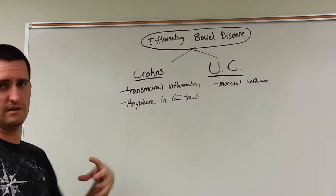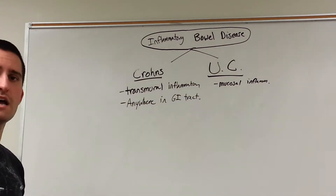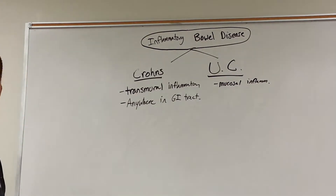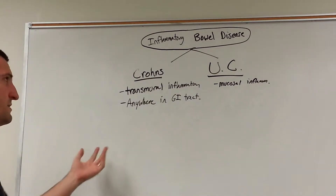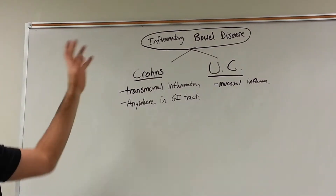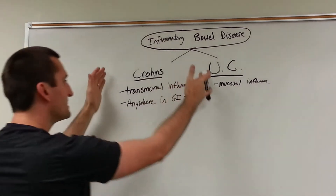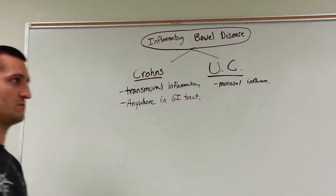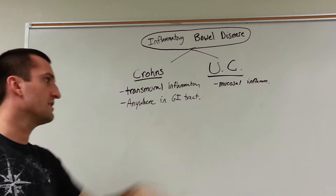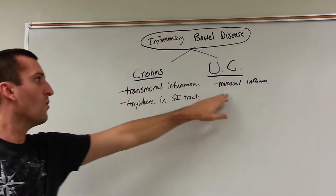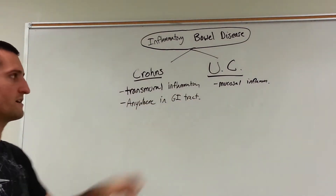These two present pretty similarly — a patient comes in with abdominal pain, ten bowel movements a day that are bloody. It could be Crohn's, it could be ulcerative colitis. However, in medicine we separate them into two distinct groups: the Crohn's group and the ulcerative colitis group. One is transmural, one is just one layer of inflammation.